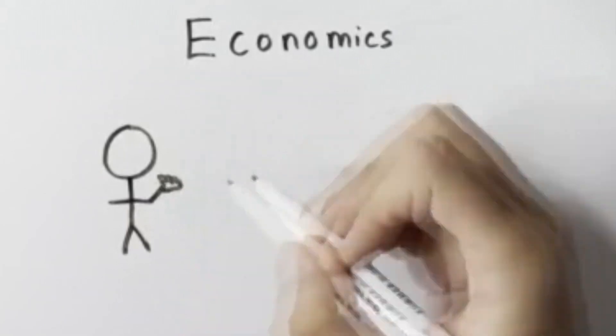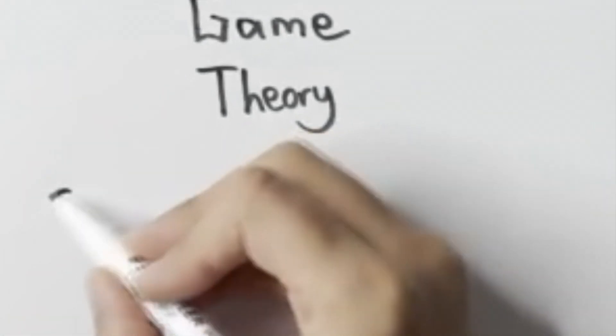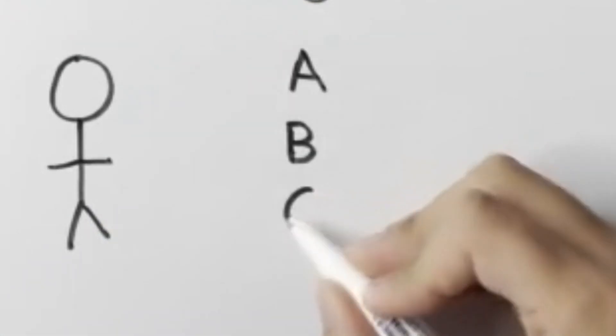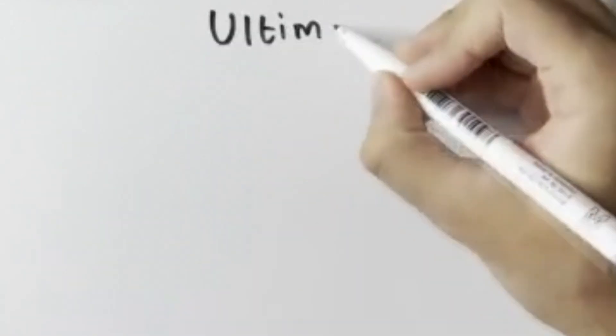Economics is concerned with predicting how people are likely to behave. One of the most well-known theories that does this is called game theory. This simply predicts how people are likely to behave in a situation where they have multiple options. Here's a simple application of game theory in a situation called the ultimatum game.